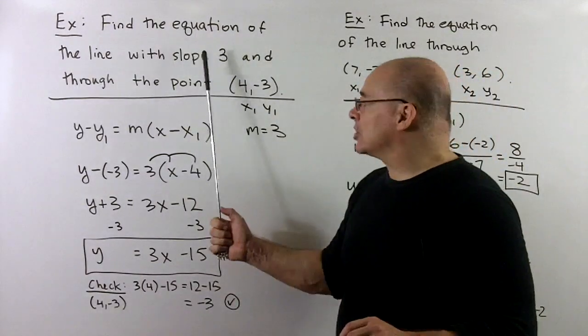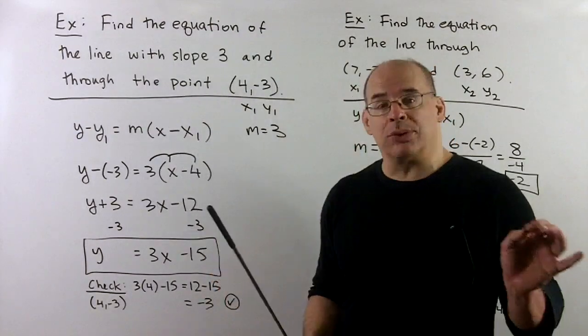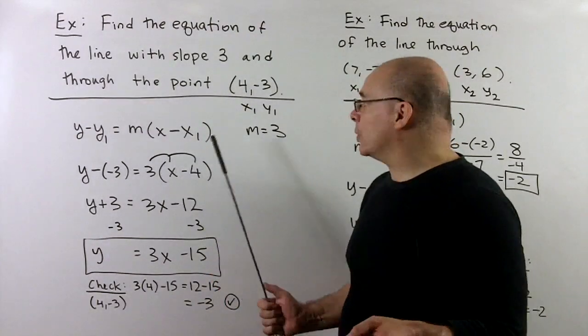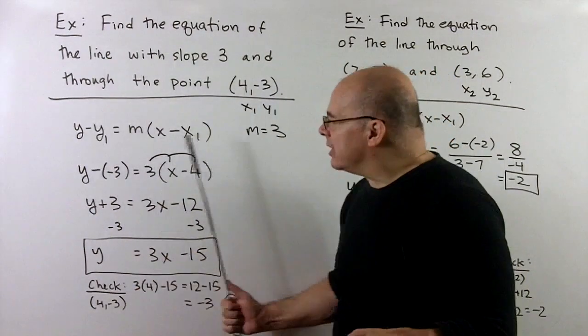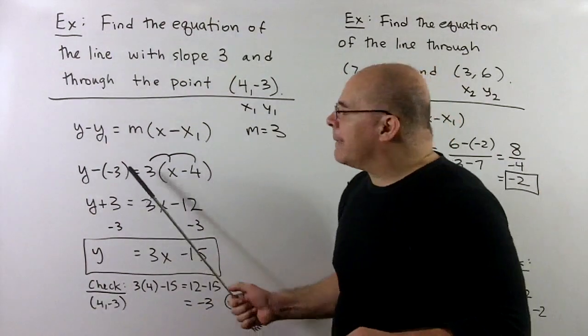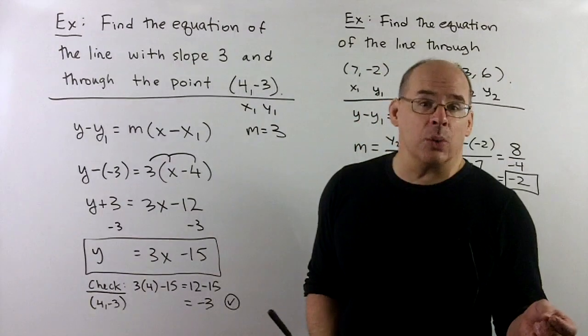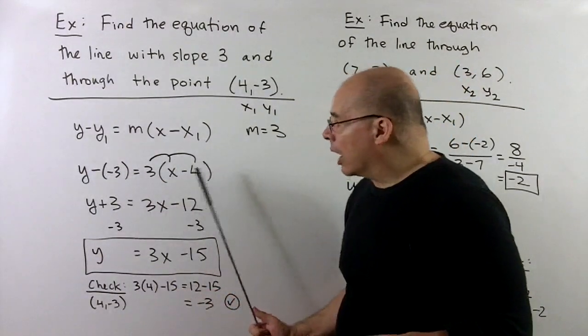So I have slope 3, so m is 3, and we have a point, it's not the y-intercept, but not a problem. So we have x₁ is 4, y₁ is minus 3. We just drop our numbers into the equation for care, I'll put the minus 3 in with parentheses so we don't lose our minus signs.